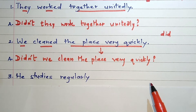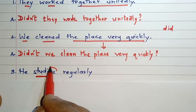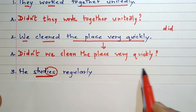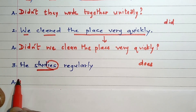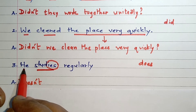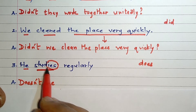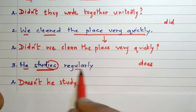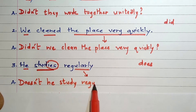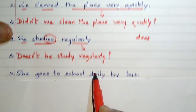'He studies regularly.' The verb 'studies' shows that the sentence is in present tense, and the verb is ending with I-E-S, so we have to assume 'does'. The sentence is affirmative, so we will begin with 'doesn't', followed by the subject 'he'. We use the root verb of 'studies', that is 'study' (S-T-U-D-Y). The remaining part, 'regularly', is copied. Followed by a question mark: Doesn't he study regularly?